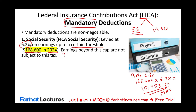The reason Social Security stops at the threshold is that benefits are also capped — you pay a limited amount into the fund and you receive a limited amount when you retire. That's the Social Security component of FICA: a rate of 6.2% with an annual earnings limit.